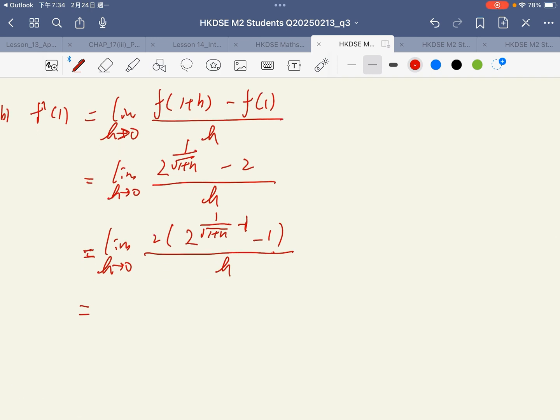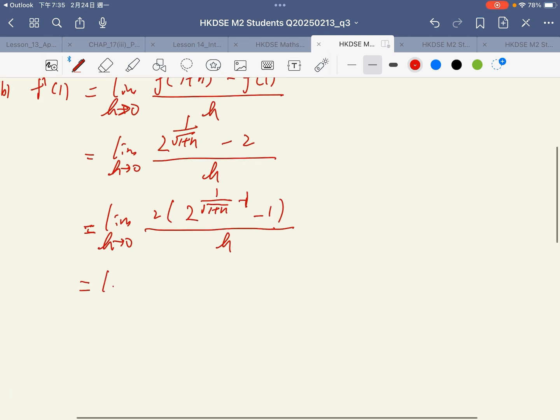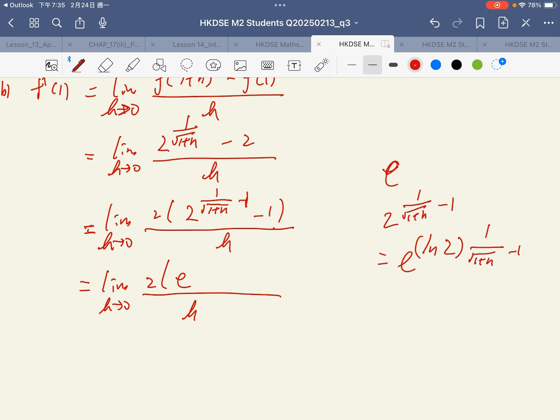And then take the limit. Oh wait, I have to go back and change the base. So 2 to the power 1 over square root of 1 plus h can be changed to base e: e to the power of ln 2 times 1 over square root of 1 plus h.